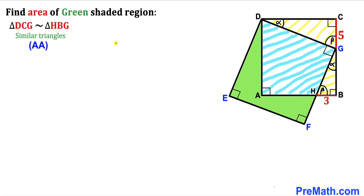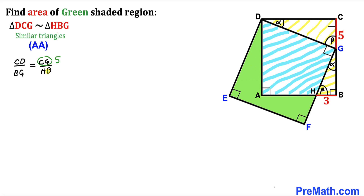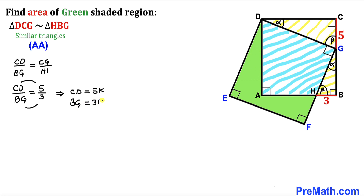Since the triangles are similar, we have a proportion: the ratio of CD to BG equals the ratio of CG to HB. We know CG is 5 and HB is 3. Since these ratios are equal, we can write CD equals 5K and BG equals 3K for some constant K.